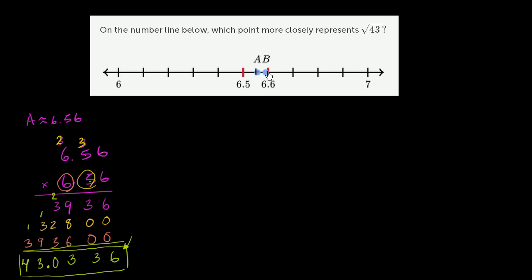Let's just think about where b is. Actually, we don't even have to look at b. Because a is pretty close. And a squared is already larger. Let me write this. So a squared, if we approximated it right, at 6.56. So 6.56 squared, which is 43.0336, is already greater than 43. Or another way of saying it, 6.56 is already greater than the principal root of 43.